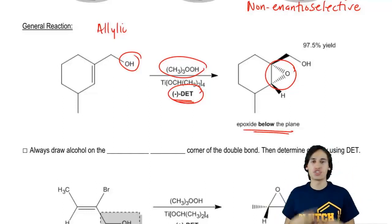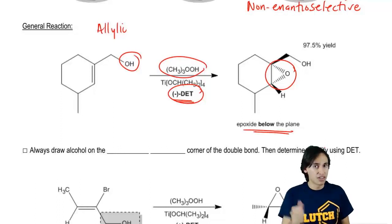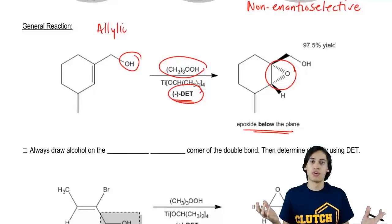So far I know these reagents are super confusing, but really I'm not asking much from you. I'm not asking you to memorize them. I'm just saying, hey, can you remember that the positive tartrate adds from the top and the negative tartrate adds from the bottom. Is that cool so far?